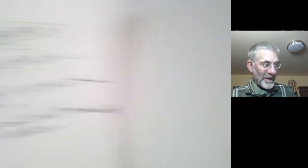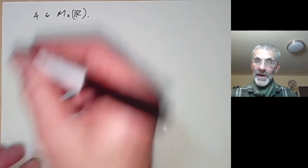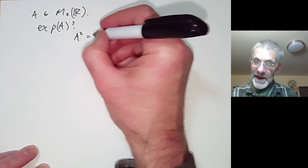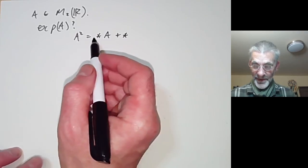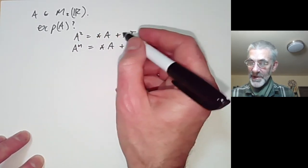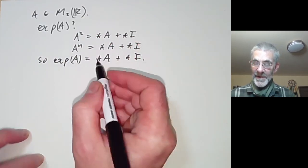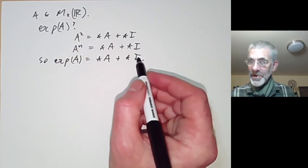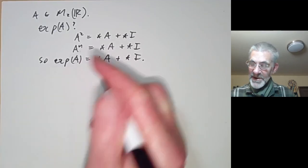Let's see what the exponential map looks like in some simple cases. Take A to be a 2×2 matrix over the reals. What is exp(A)? It's a little complicated to write down. First, we notice that A² equals something times A plus something times the identity, because A satisfies its characteristic equation — this is the Cayley-Hamilton theorem. In particular, Aⁿ is some linear combination of A and the identity matrix. So the exponential of A is equal to something times A plus something times the identity matrix — it's a linear combination of these two.